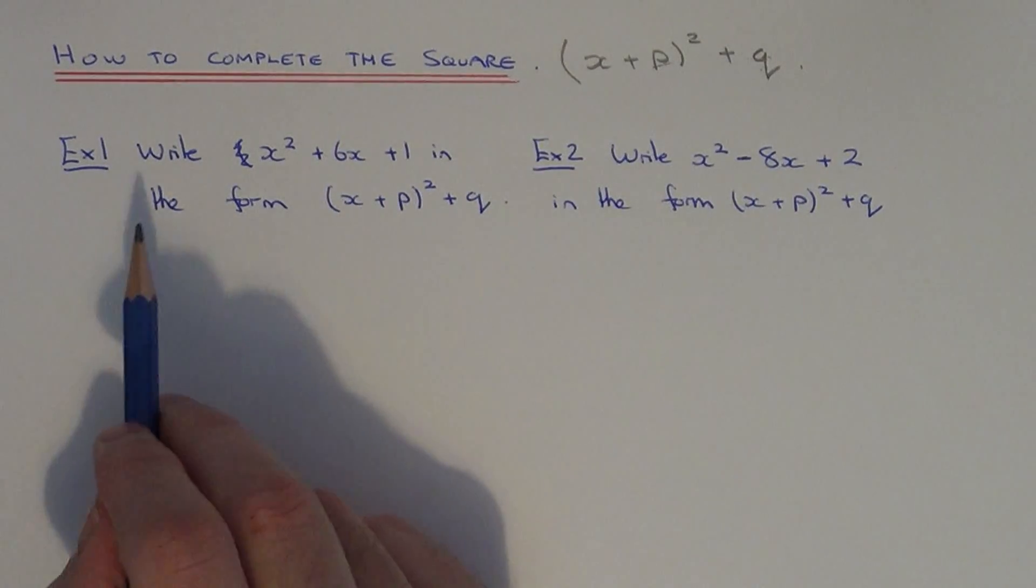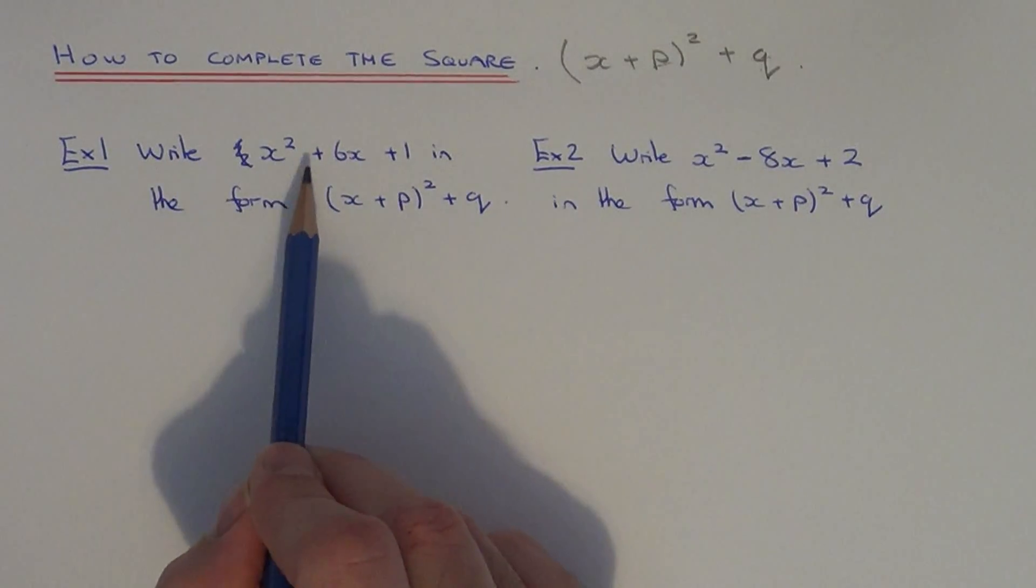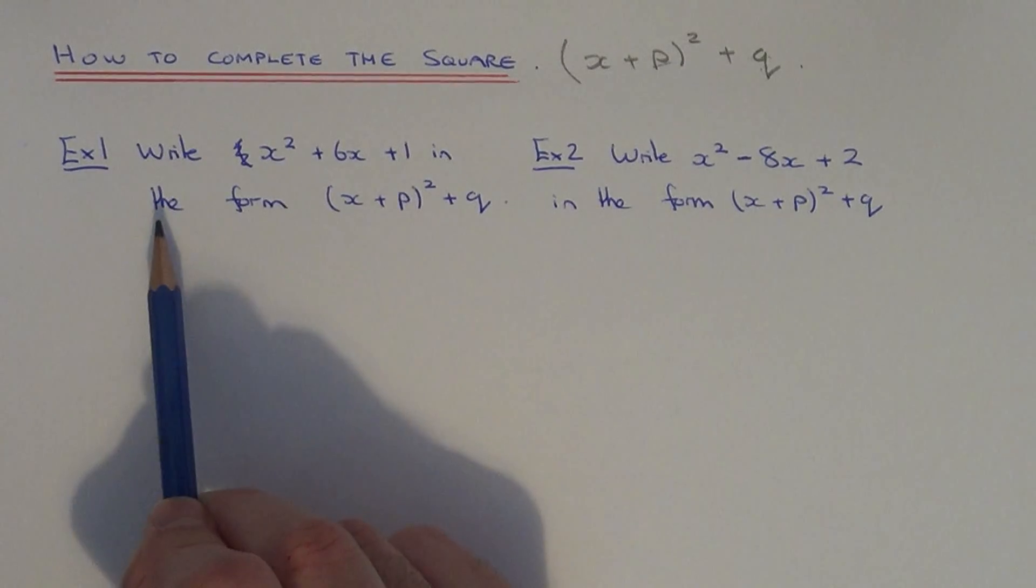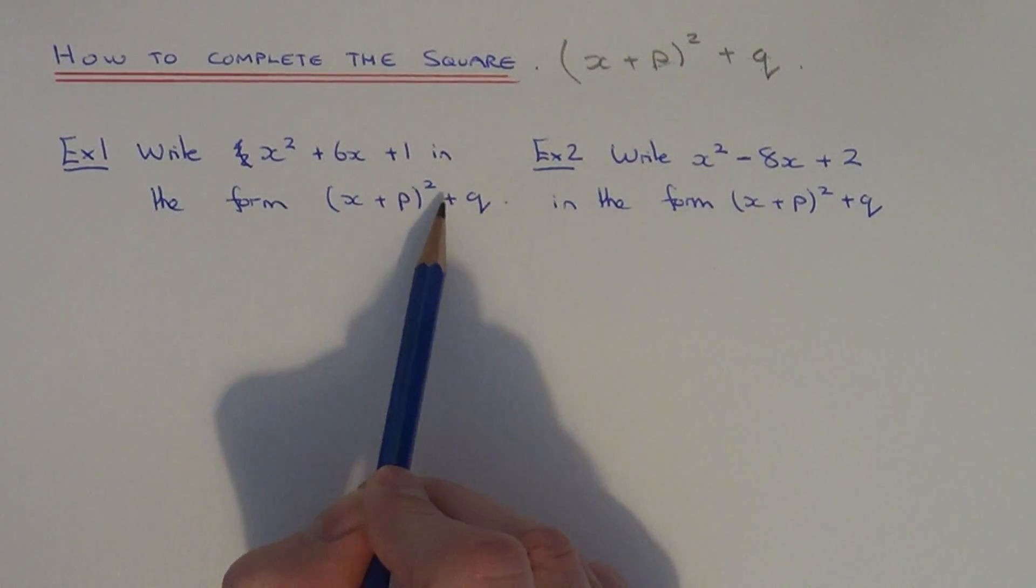Let's have a look at example one. We've got to write x squared plus 6x plus 1 in the form x plus p squared plus q.